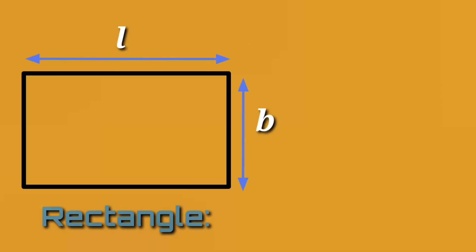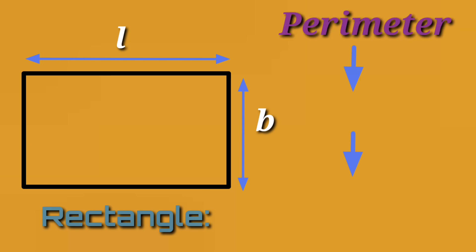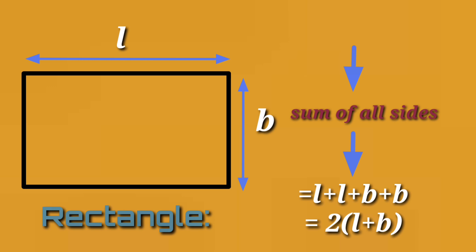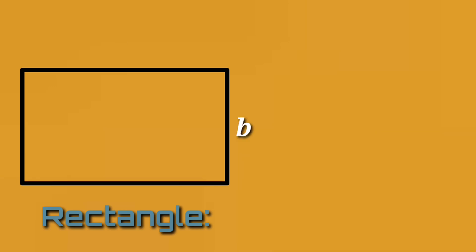Now, which shape is this? Yes, this is a rectangle! A rectangle has its length and its breadth. The perimeter of the rectangle means the sum of all sides, and the formula is 2 multiplied by (length + breadth).